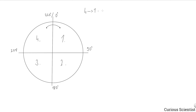If the previous quadrant was four and the current is one, we know the direction was clockwise and we increase the number of turns by one. If we go the other way - from quadrant one to quadrant four - that's a one-to-four transition in the counterclockwise direction. So if the previous position was in the first quadrant and now it's in the fourth, we know we moved backwards and we decrease the number of turns accordingly.